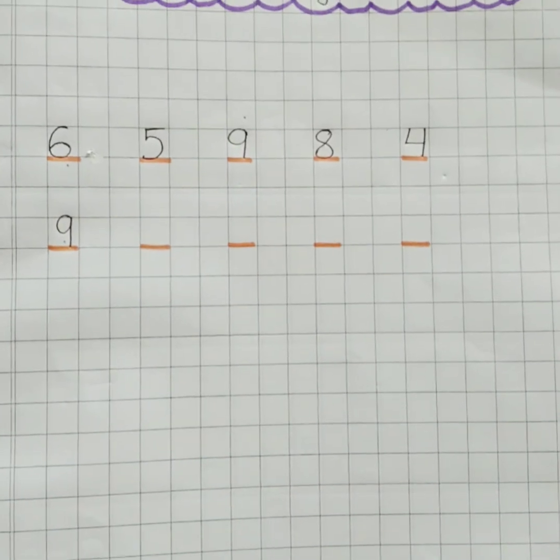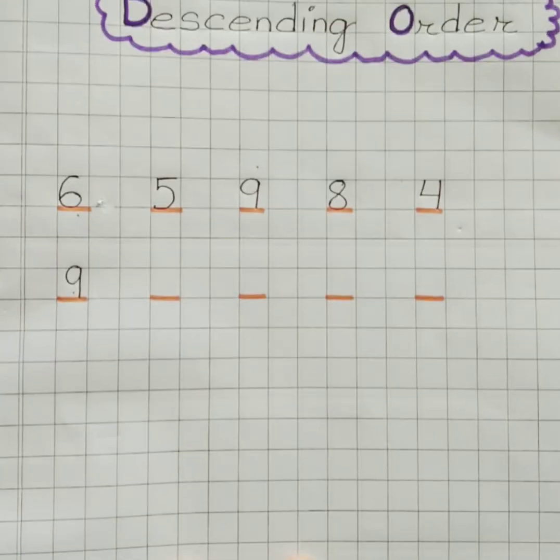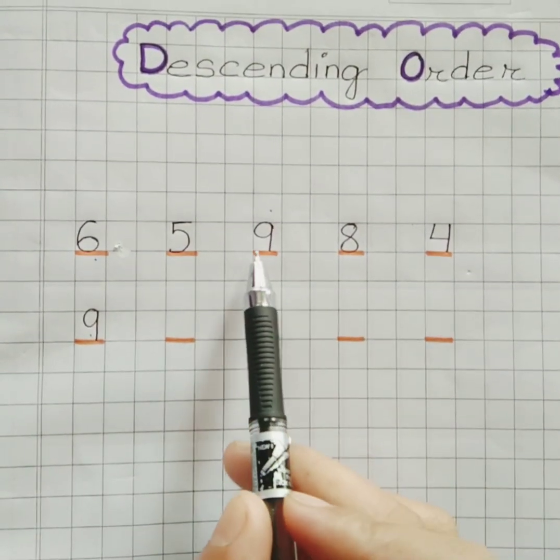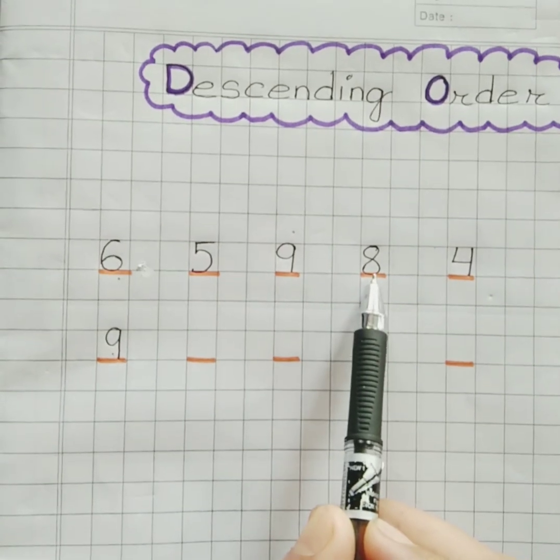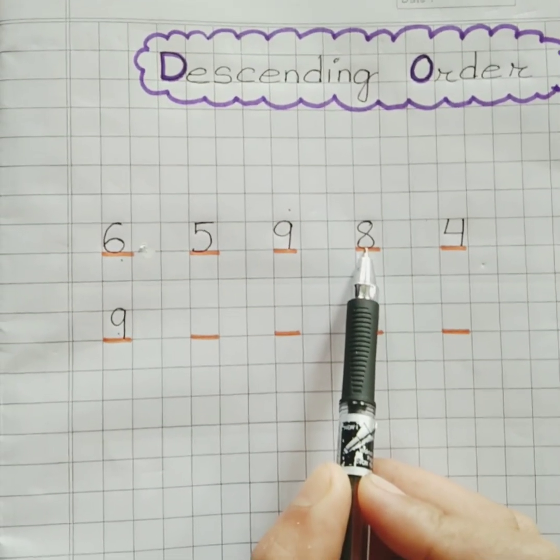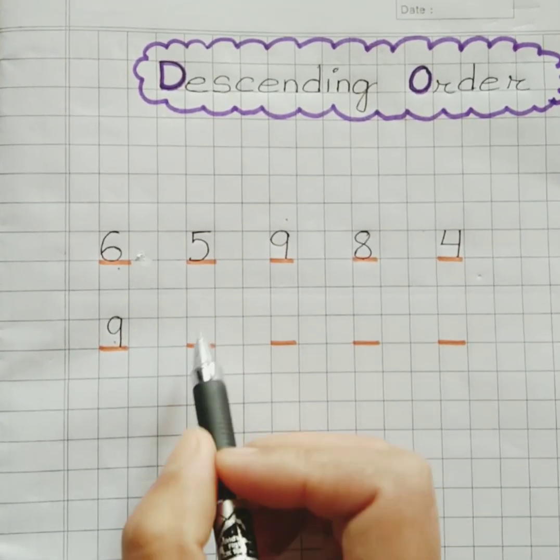Now next. After 9, which one is the largest? Yes, 8 is the second largest number. So we'll write 8 at second place here.